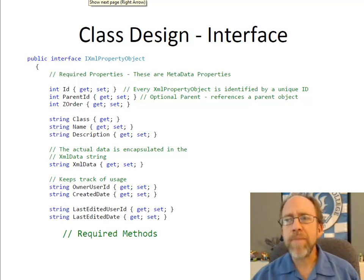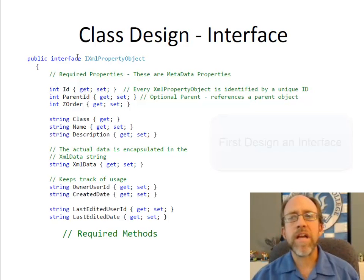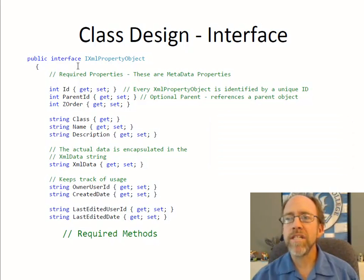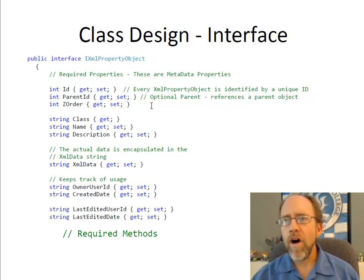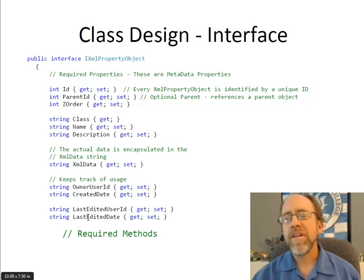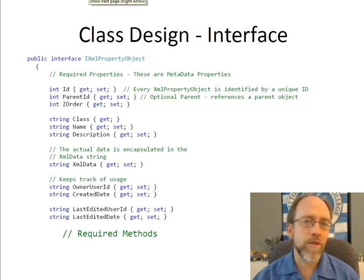Sitting on top of this database, I also have a class design. If I'm going to design a class, the first thing I do is design an interface. The class is called XMLPropertyObject, and the interface is IXMLPropertyObject. If you notice right here, you simply have a complete mirroring of all the fields you saw on the table: ID, parent ID, z-order, class name, description, XML data, owner user ID, created date, last edited user date, and last edited date. Version would be in there too, but I haven't used it yet.